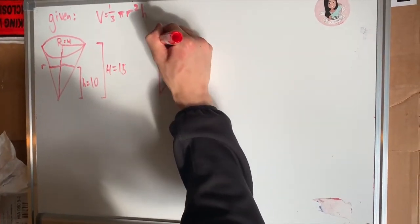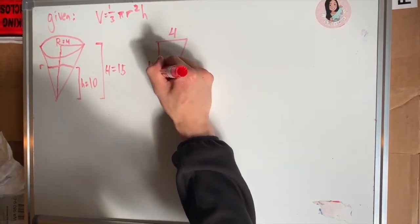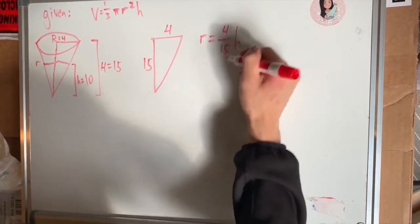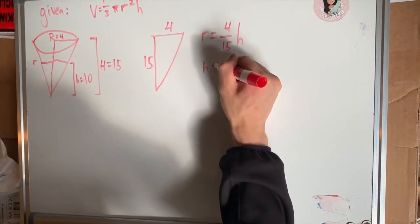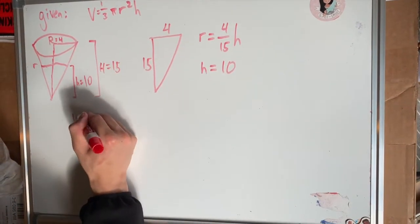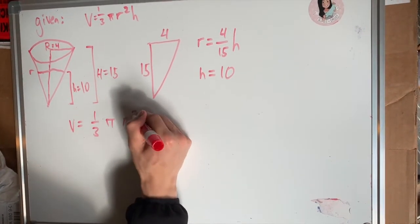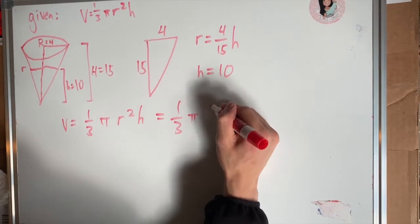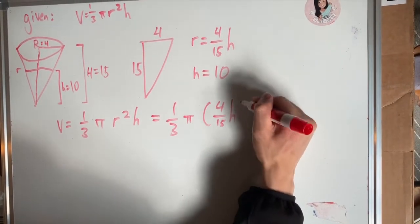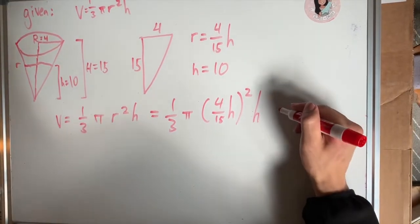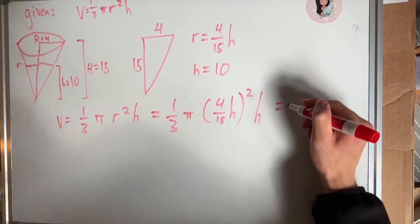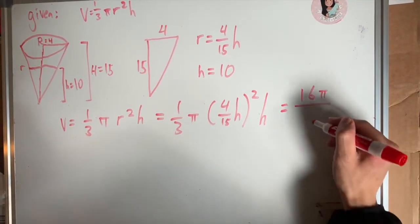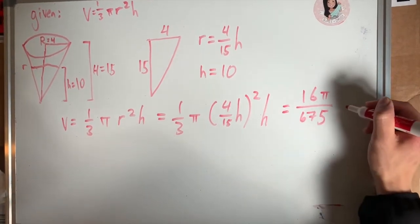We are given a cone with a radius of 4 and a height of 15. We know that the radius is 4/15th of the height, and this is true throughout the whole cone. So if the height is 10, we can substitute this into the volume equation. We get volume is one-third pi times the quantity (4/15)h squared times h, which equals (16π/675) times h cubed.